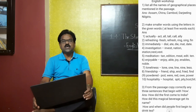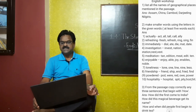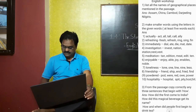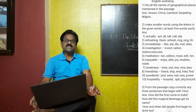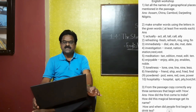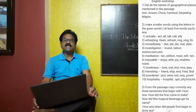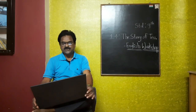Question number three: from the passage, copy correctly any three sentences that begin with 'how'. First: how did tea first come to India? Second: how did this magical beverage get its name? Third: how and when did people first begin to drink tea?